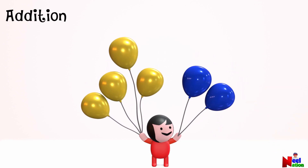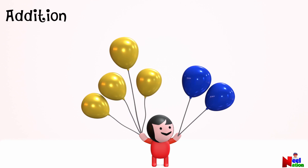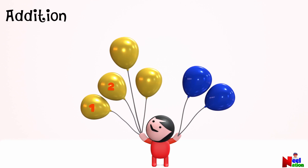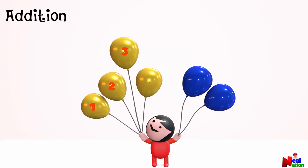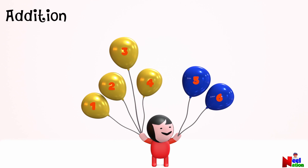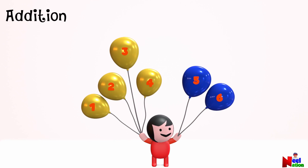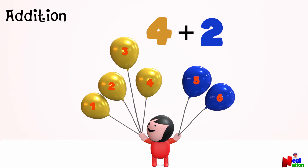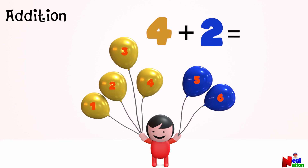Let's count how many balloons he has now. One, two, three, four, five, six. So Ben had four balloons, and when he added two more, he now has six balloons in total.